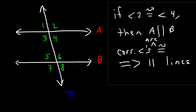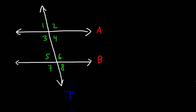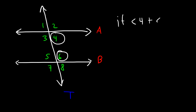There is one more term you need to know: same-side interior angles. Angles 4 and 6 are on the same side of the transversal — both on the right side. If these two angles are supplementary, meaning angle 4 plus angle 6 adds up to 180 degrees, then lines A and B are parallel to each other.